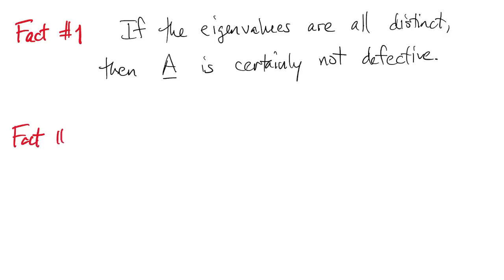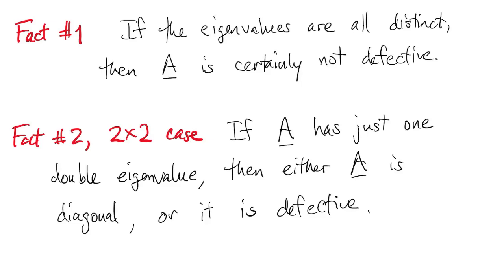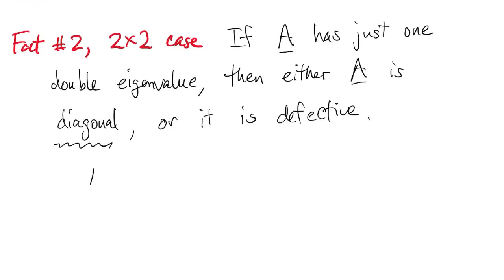But in the 2x2 case, actually, that's also a very easy determination. So if you're in the 2x2 case and you have a repeated eigenvalue, it's just one double eigenvalue, then there are only two possibilities. Either A is a diagonal matrix or it's defective. And actually, it's a little bit more specific than that. It's a diagonal matrix and both diagonal values are just the eigenvalue. So in fact, it's just a multiple of the identity matrix. So the repeated eigenvalue case is pretty easy to figure out in the 2x2.